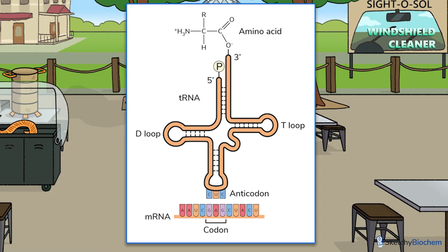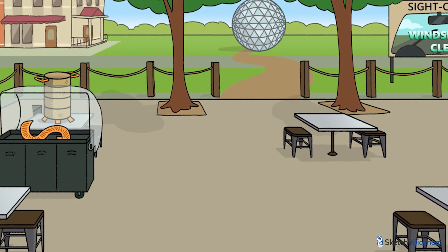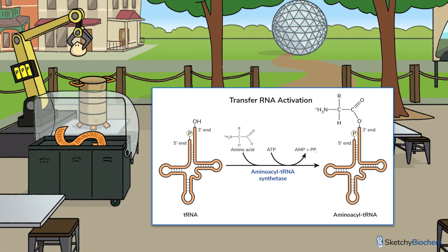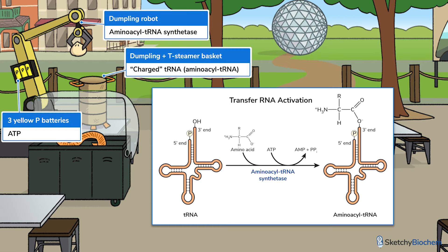Before we can actually start making proteins, we'll first need to charge the tRNA molecule. Aminoacyl tRNA synthetase uses ATP to attach an amino acid to the 3' end of the tRNA acceptor stem, creating a fully charged aminoacyl tRNA. This enzyme is symbolized by the robot adding dim sum to a tea steamer basket. Note the three yellow P batteries, because we need ATP to charge the tRNA molecule. Our bodies have 20 different versions of this enzyme, one for each amino acid.